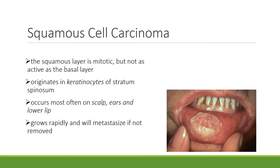The second type of skin cancer is squamous cell carcinoma. The squamous cell layer is mitotic but not as active as the basal layer. This cancer originates in the keratinocytes — the waterproofing cells in the stratum spinosum. Most often you'll find this cancer on the scalp, the ears, and the lower lip. It grows rapidly and it will metastasize, that is it will move to other areas if it's not removed.